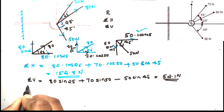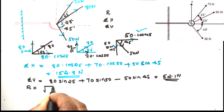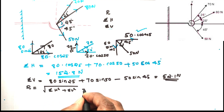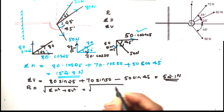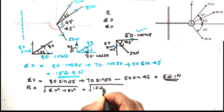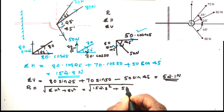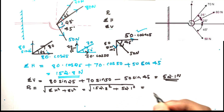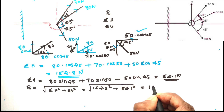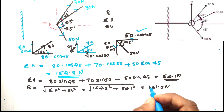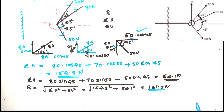Now we have Sigma H and Sigma V. The resultant R is equal to the square root of Sigma H squared plus Sigma V squared: square root of 152.8 squared plus 52.1 squared, which gives 161.5 Newtons.